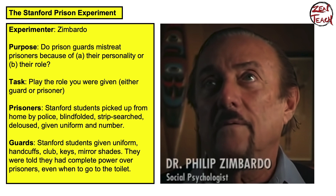All of these were symbols of their social roles. Just like the prisoners were anonymized and given a number, the guards were anonymized by shades so you couldn't see where they were looking, giving them a sense of power. All of these objects and procedures were designed to really ingrain the idea of a social role in the participants.